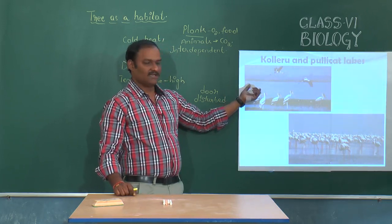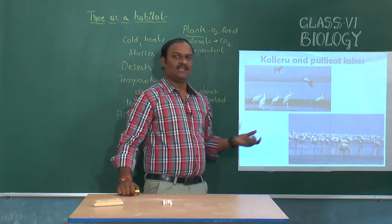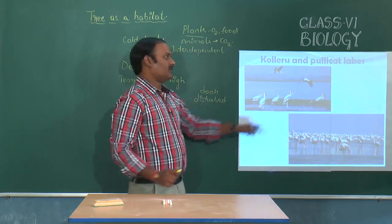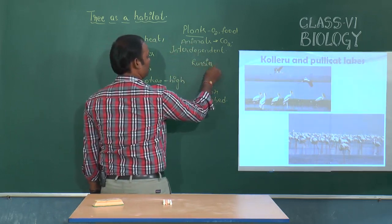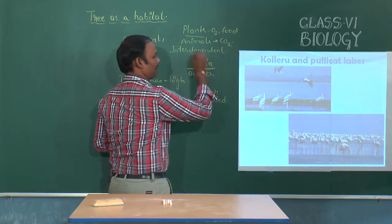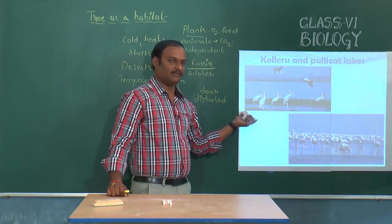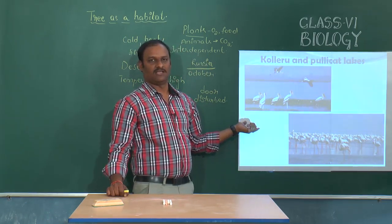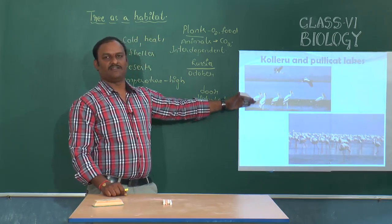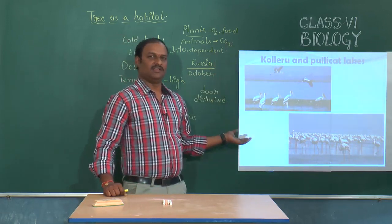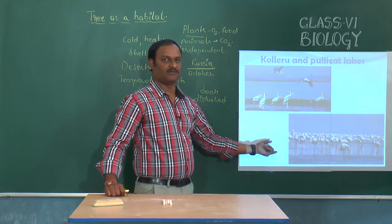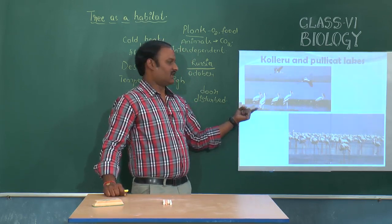For example, there is a lake called Koleru and Kulikat in Andhra Pradesh where different types of birds, such as Siberian cranes and pelicans, come from Russia in the month of October for their survival. They reproduce in those areas depending on the climatic conditions, and after reproduction they migrate back to their original places. But due to the development of aquaculture in these ponds, the habitat has been completely destroyed, which also destroys the lives of these migratory birds.